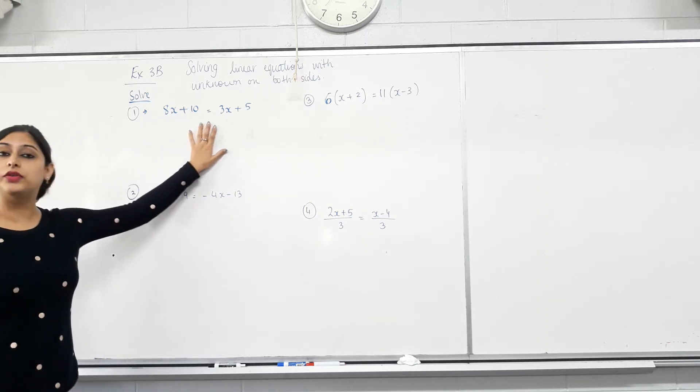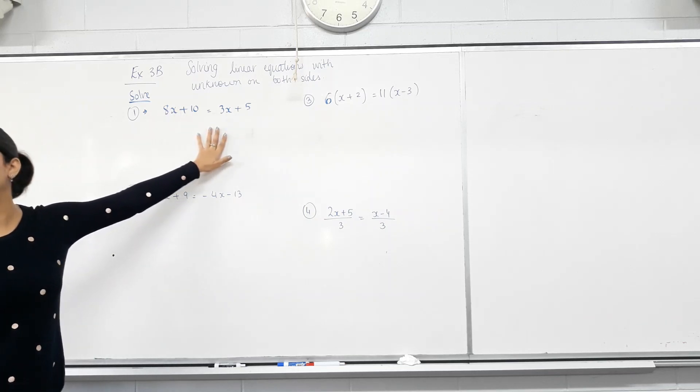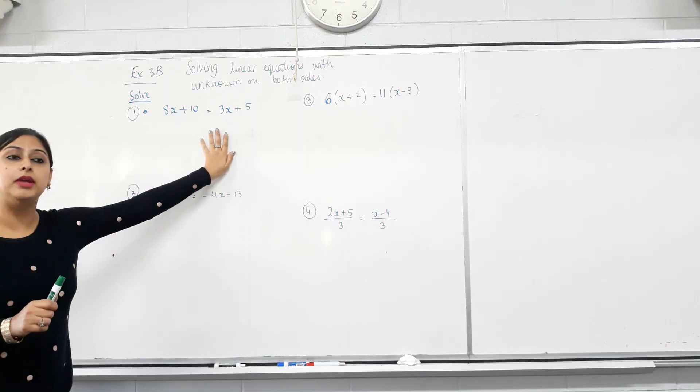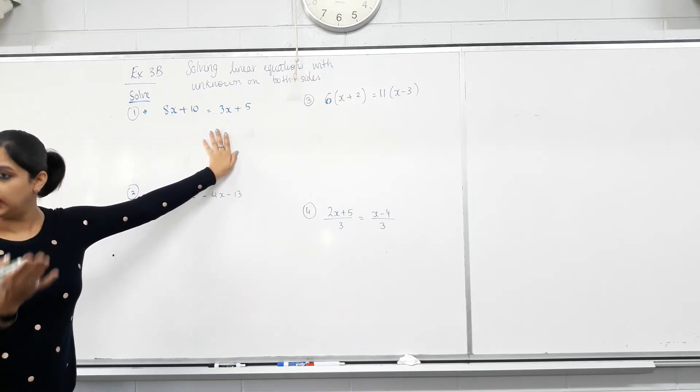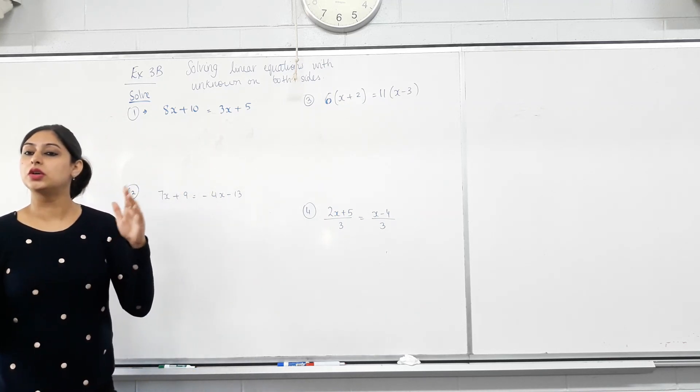And now we need to find the values of x for which both sides are equal. So these are slightly different to the ones we did last lesson. These equations have the unknown on both sides. Okay? So our aim is to move the unknown to one side and everything else to the other. Well done. How do we move things to the other side? Opposite operations.